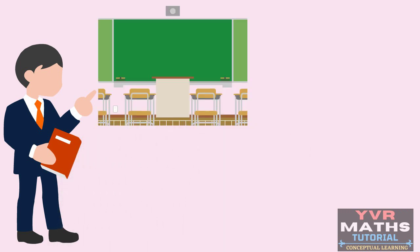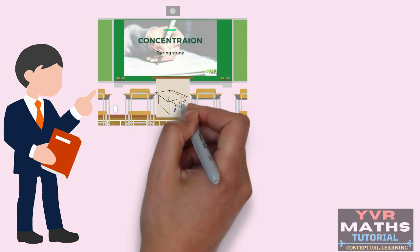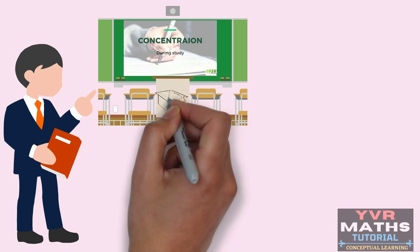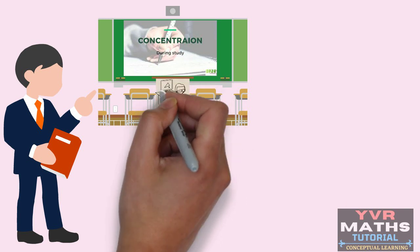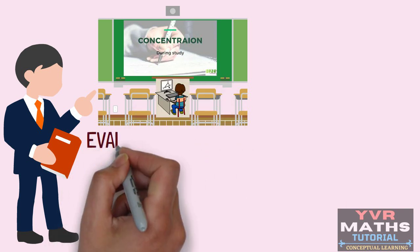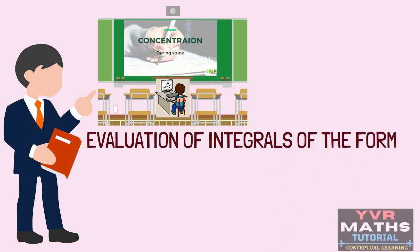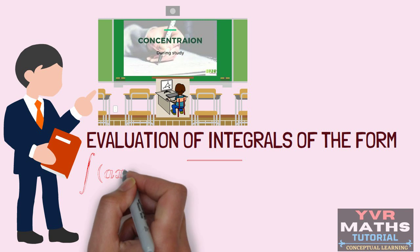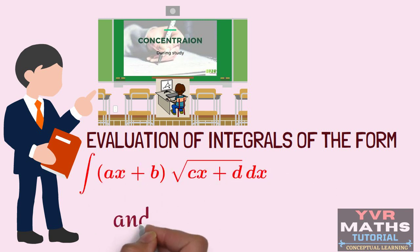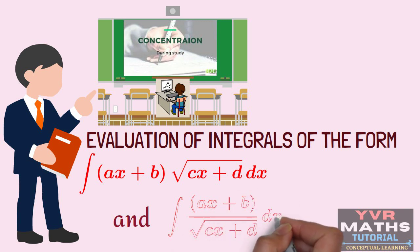So far we have been integrating simple functions. Now we shall learn some techniques of integration which will enable us to integrate somewhat more complicated functions we encounter in mathematics. In this video, I am going to discuss how to evaluate integrals in the form of integral (AX + B) times the square root of (CX + D) dx, and integral (AX + B) over the square root of (CX + D) dx.